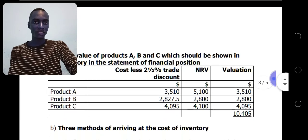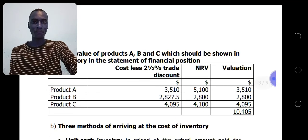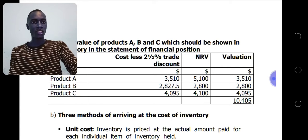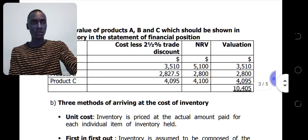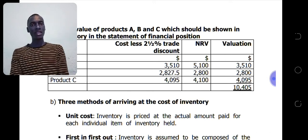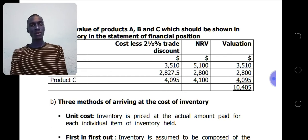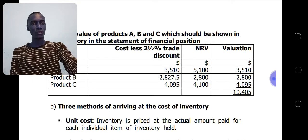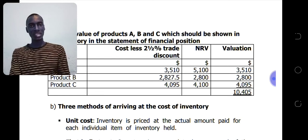For product A, the cost — supplier's price less the 2.5% trade discount — is $3,510. The NRV is $5,100, so the lower is $3,510. You look at each individual item and find which is lower out of cost and NRV, and use that as the basis for valuation. In this case, the total valuation of the inventories is $10,405, taking the lower of cost and NRV for each item.